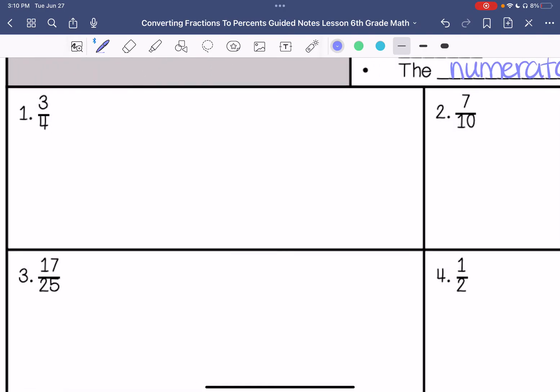All right, number one is three-fourths. What times four is 100? Four times 25 is 100. So I'm going to multiply the top by 25 as well. So three times 25 is 75. So my answer is 75%.